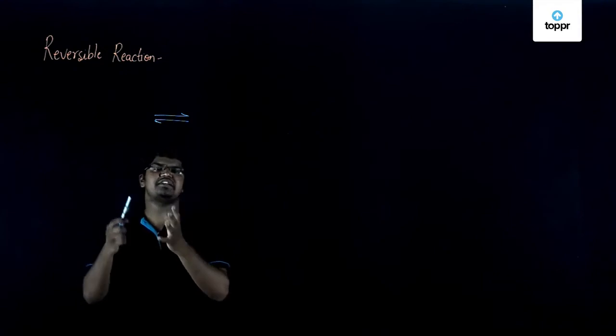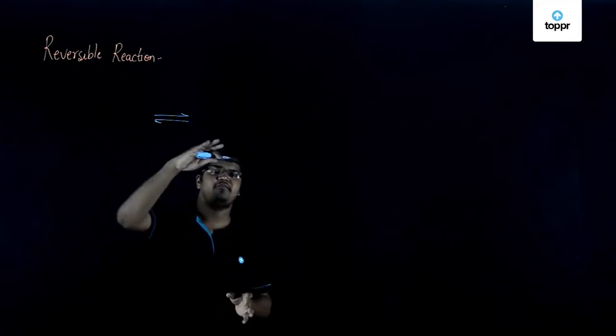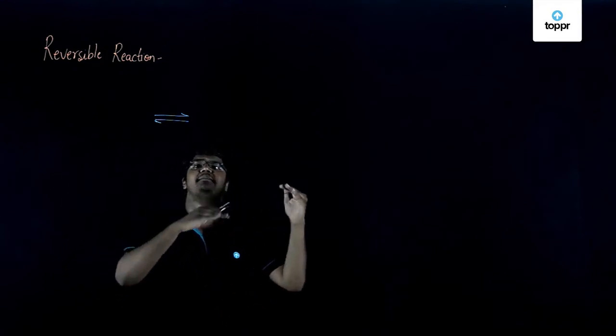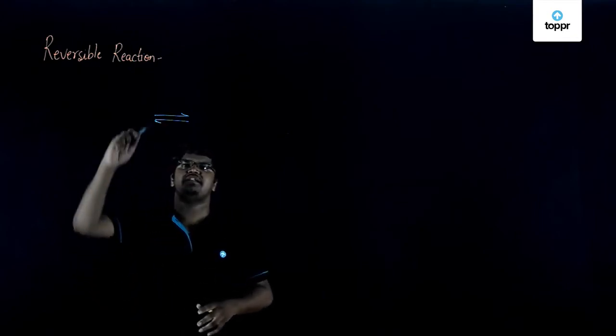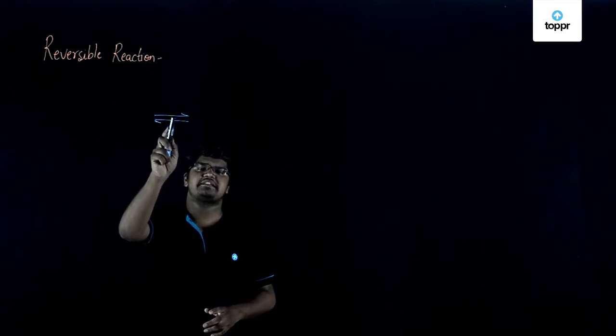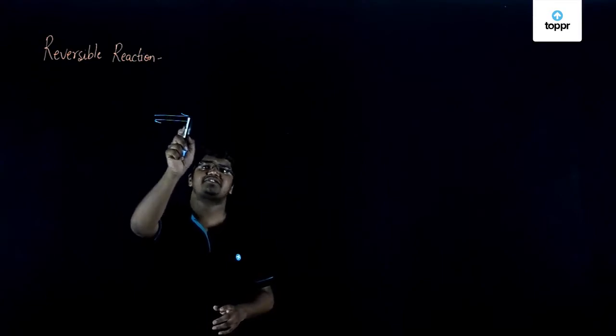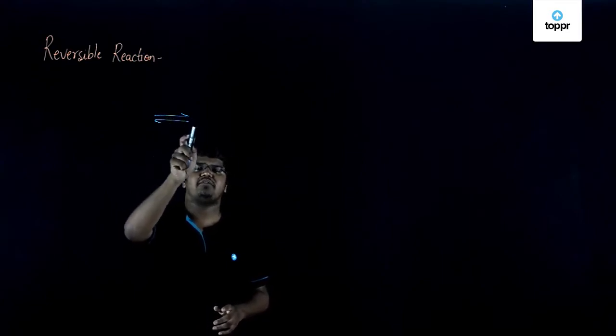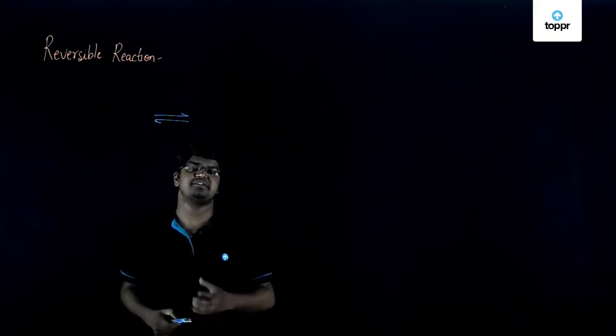A partial part of this reaction is going in the forward direction while partially it is coming back in the backward direction. The partial signs are shown here where the upper arrow represents the partial forward direction and the downward arrow represents the backward direction.